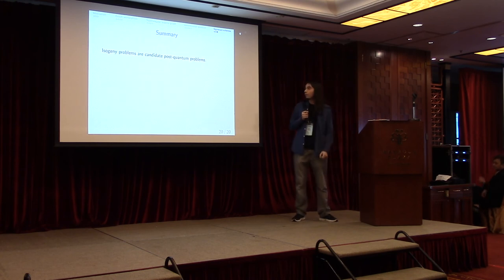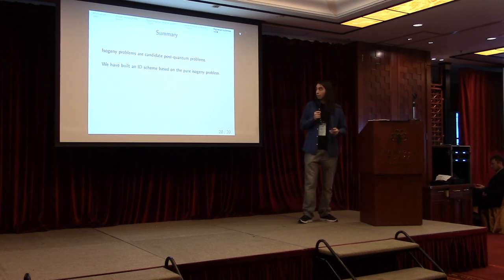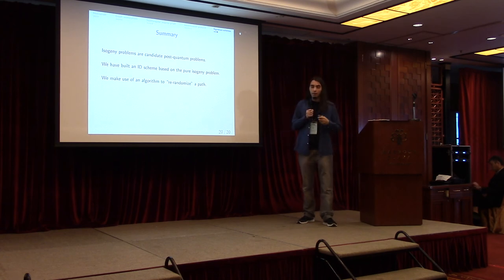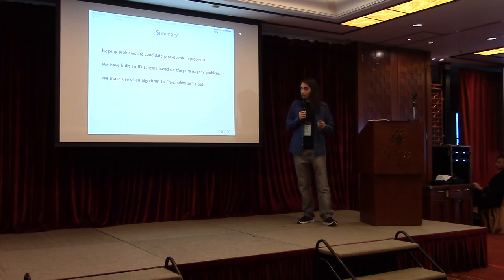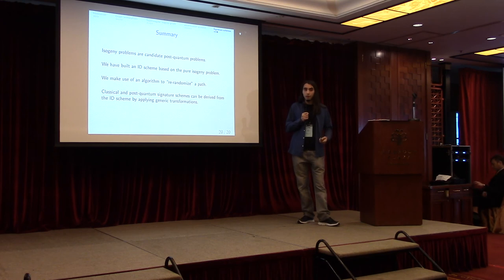So to summarize what we did: we started with isogeny problems which we believe are a good candidate for post-quantum security. We have an identification scheme based on the pure isogeny problem, in contrast to the previous scheme which was based on a potentially weaker problem. A key to do this was this randomization algorithm that was a key step of our proof. And finally, we can derive signatures in a standard way using generic transformations. That's the end of the talk, thank you very much.